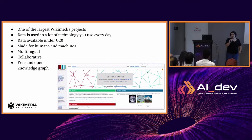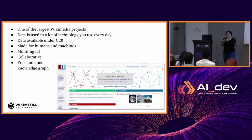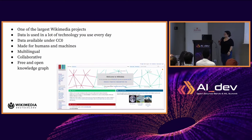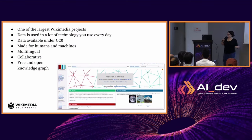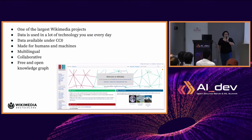The data in Wikidata is available under CC0, so anyone can do with it whatever they want. It's created by a community with the help of machines, and also for humans and machines. Wikidata is highly multilingual and very collaborative — anyone can come and edit it. Last but not least, it's a free and open knowledge graph.